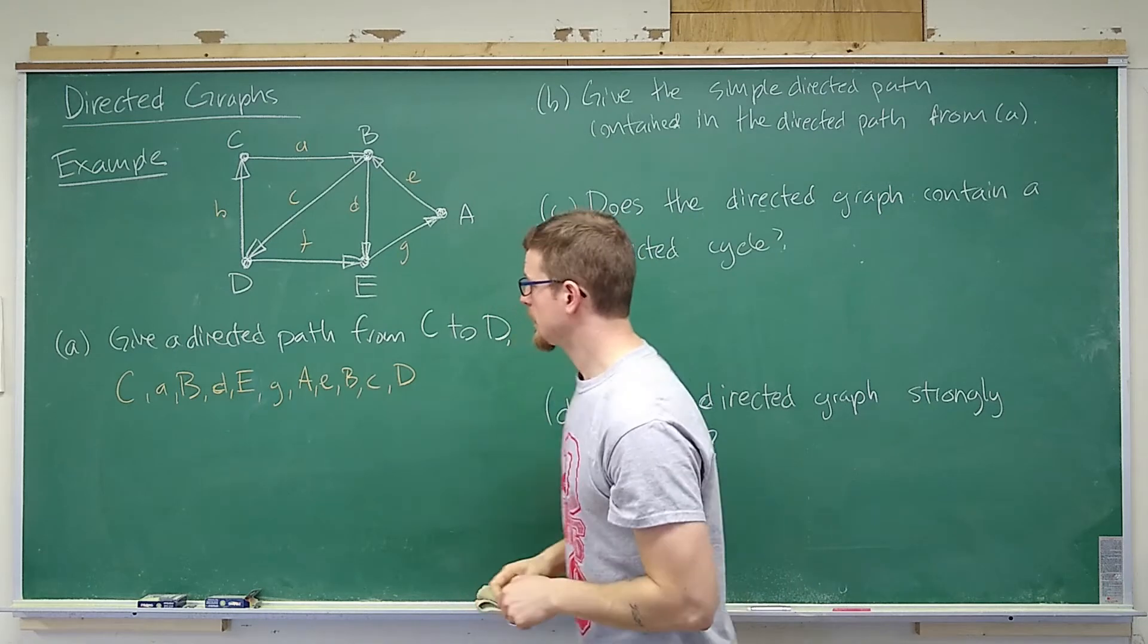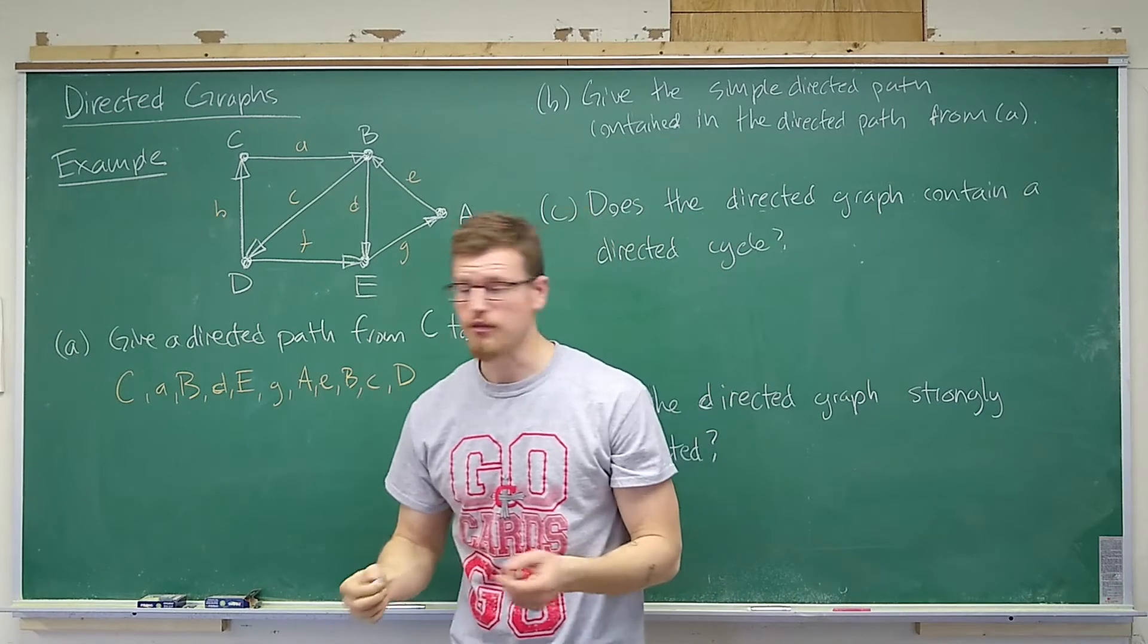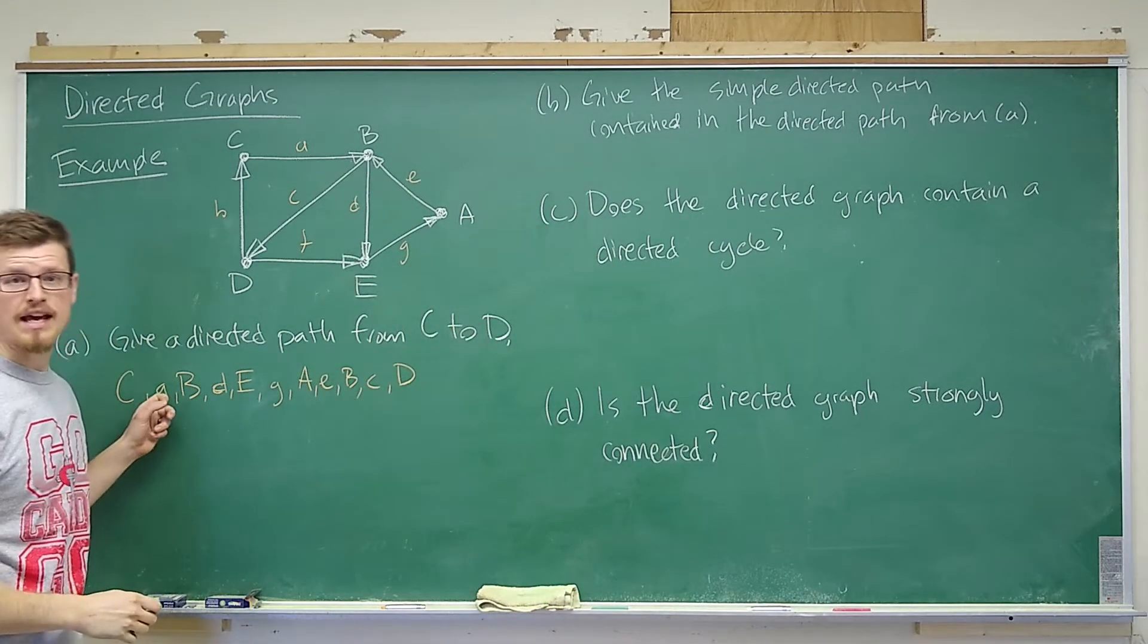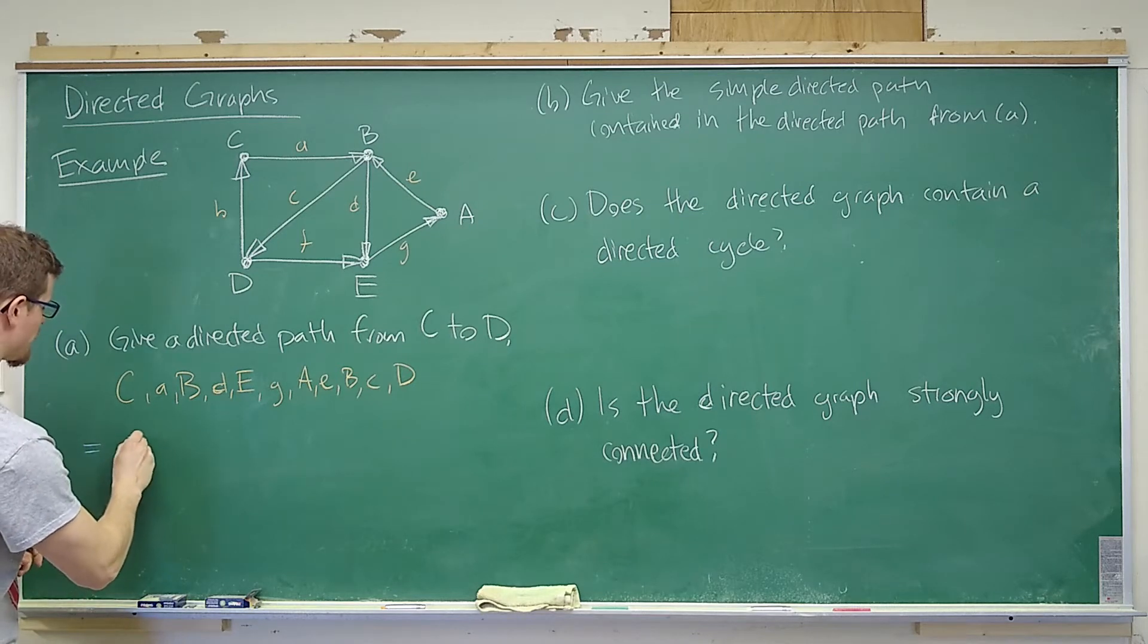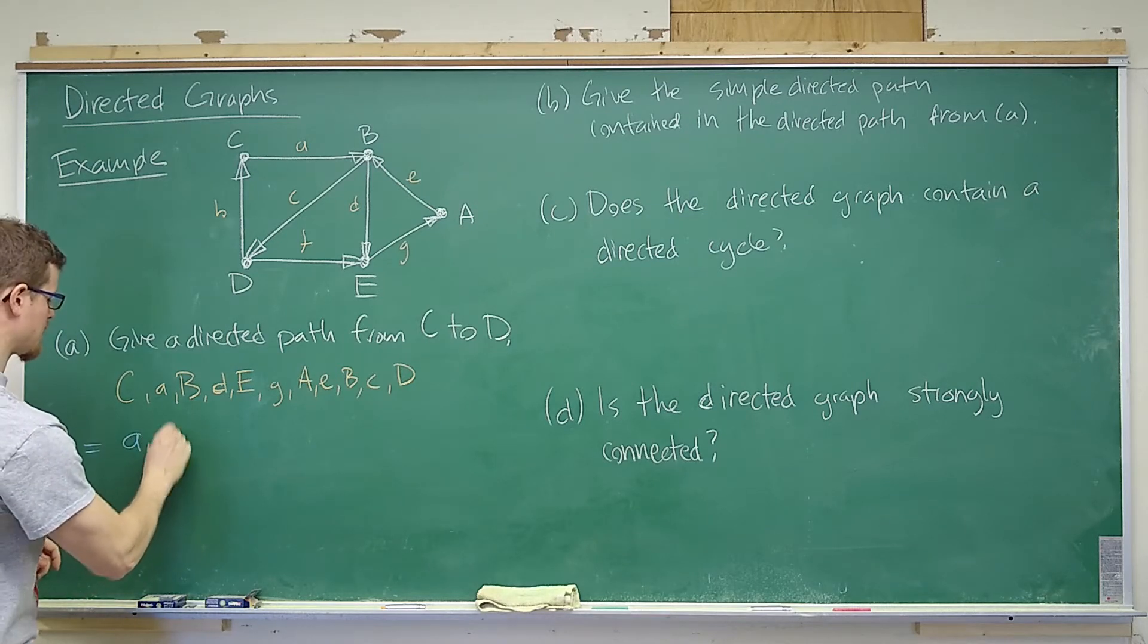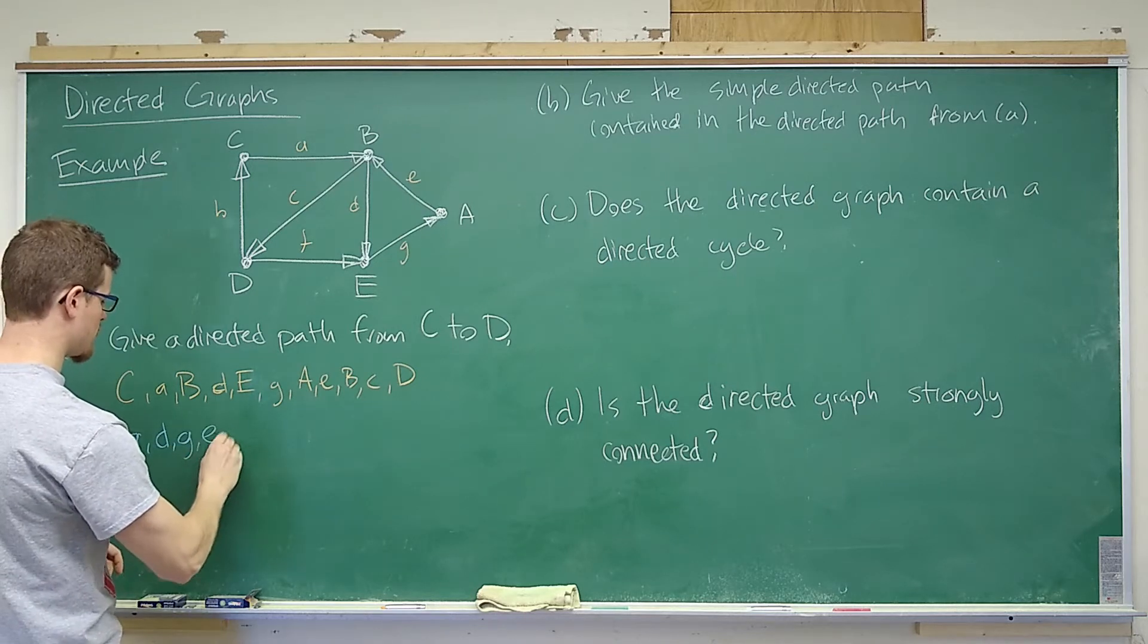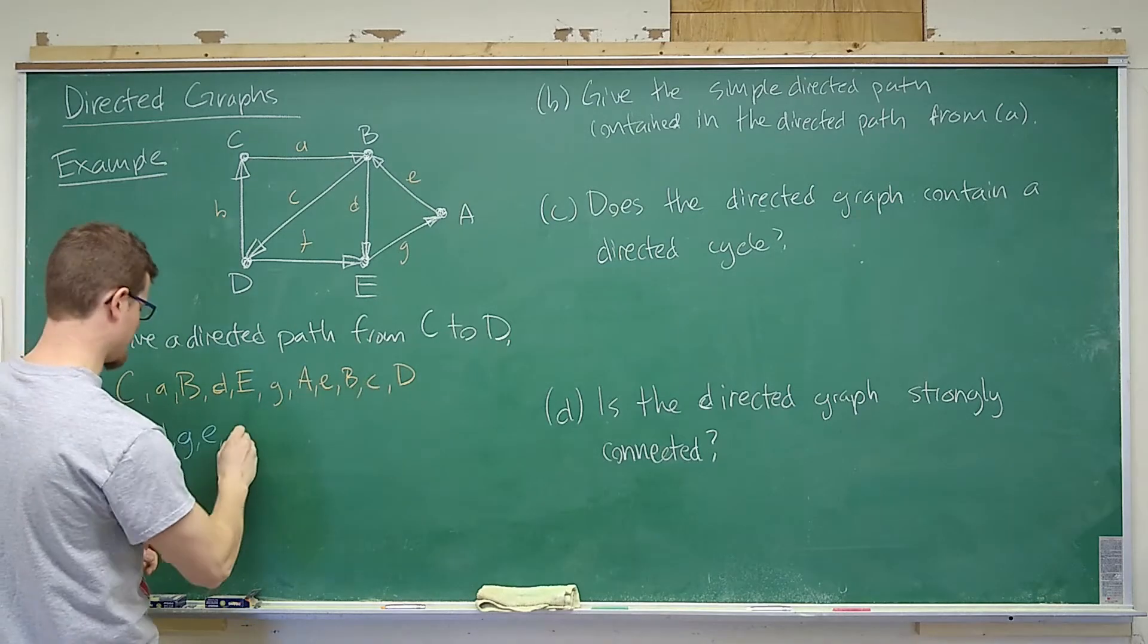In this case, what I'd also like to point out is that there are multiple representations for paths. So this includes each vertex and each edge. We can also represent this just by the edges, so equivalently we have A, D, G, E, and C.